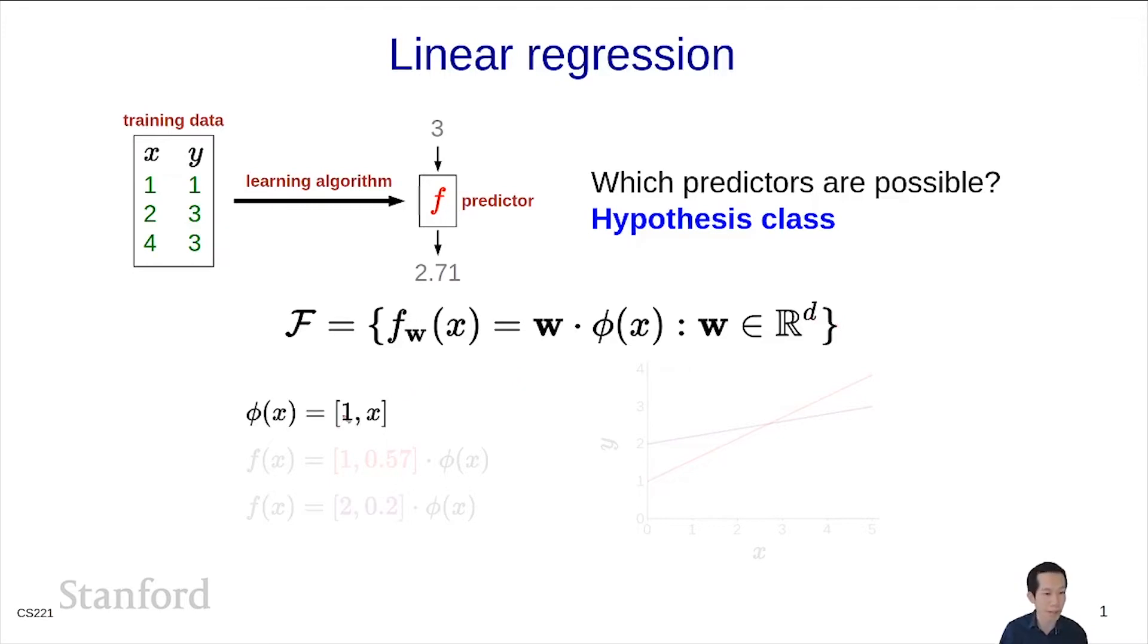So if we take φ(x) equals [1, x], like we did before, then we can get some lines. If we set the weight vector to be [1, 0.57], then we get this line with an intercept at 1 and a slope of 0.57. Here's a purple one with the intercept of 2 and a slope of 0.2. So all is good.